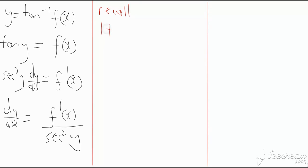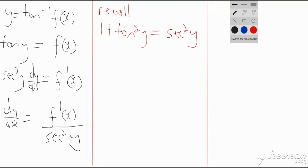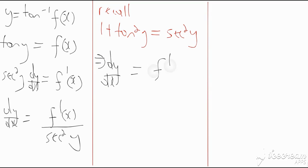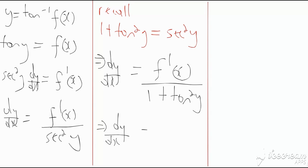Recalling that 1 + tan²(y) = sec²(y), we can replace sec²(y) with 1 + tan²(y). So dy/dx = f′(x) / (1 + tan²(y)). Since tan(y) = f(x), this gives dy/dx = f′(x) / (1 + [f(x)]²). That is the general rule for differentiating y = tan⁻¹(f(x)), regardless of what f(x) is.